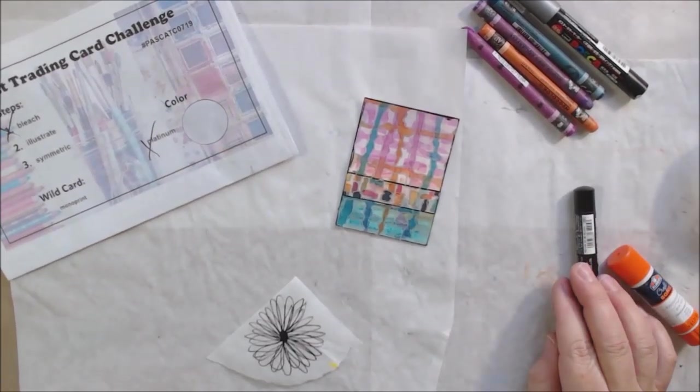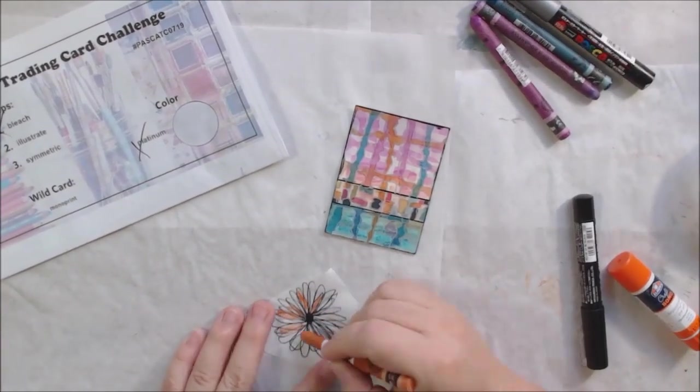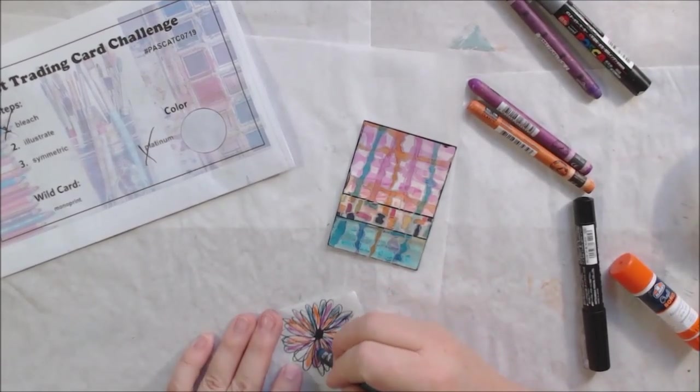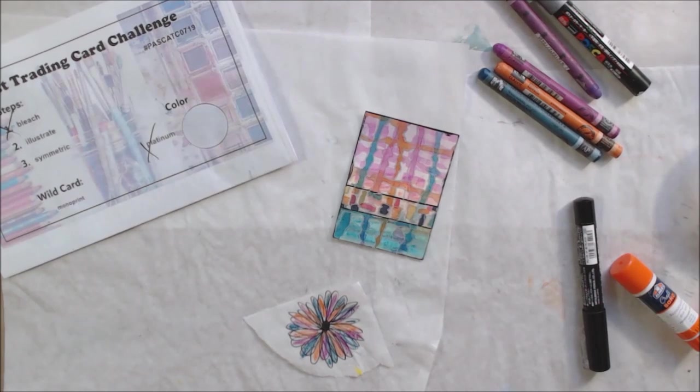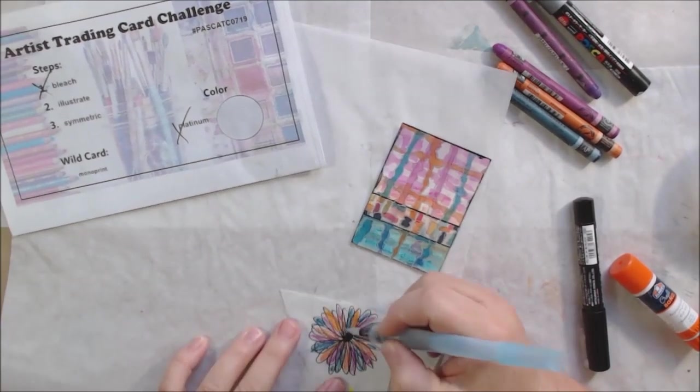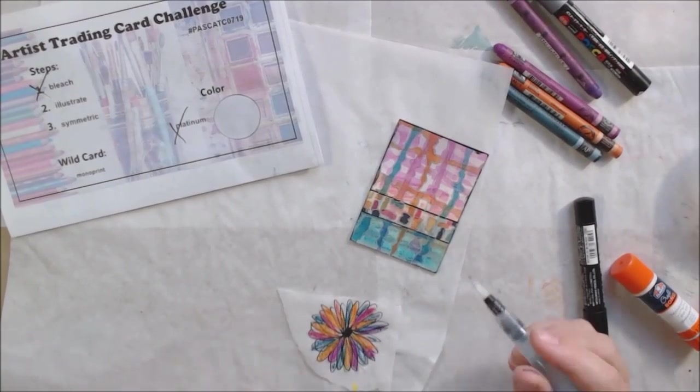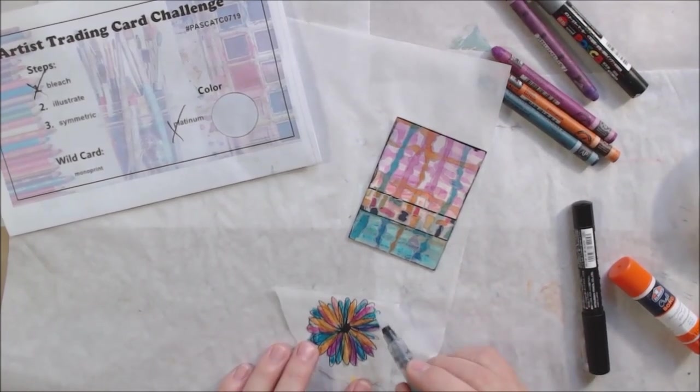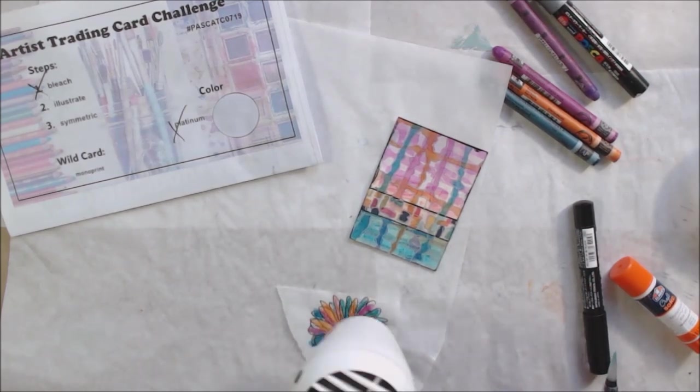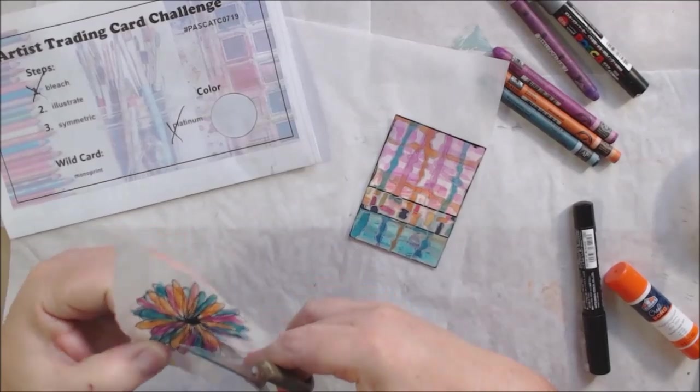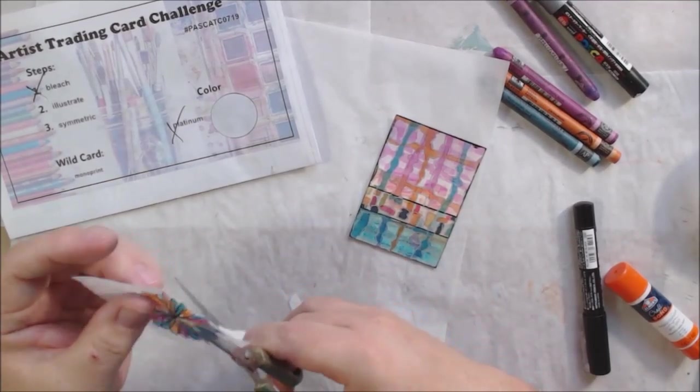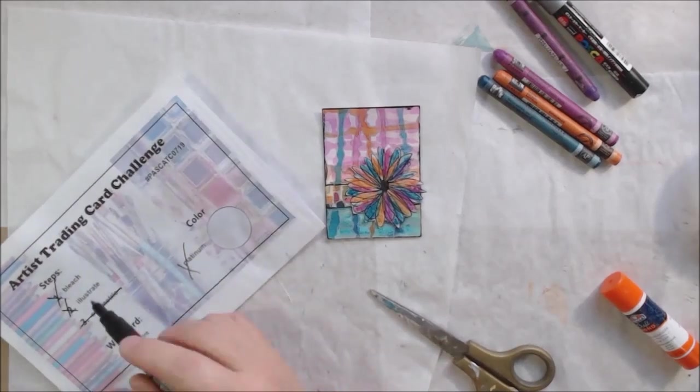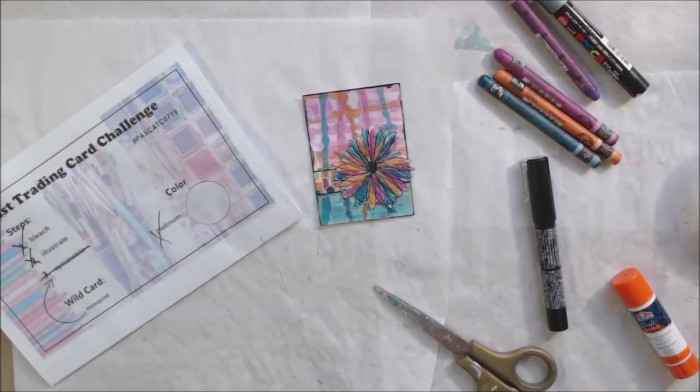Next step: illustrate. Illustrate means to draw a picture or you could also use an illustration. For this step there are other ways you could use the word illustrate, but I decided to just draw something. So I drew a very simple flower on a scrap of deli paper that I tore off that piece that I was using earlier. I used my black fine tip Posca pen - these are acrylic paint pins in case you guys don't know, Posca pens are awesome, I love them.